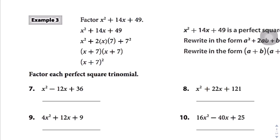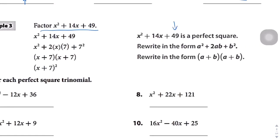Questions 7 through 10 are going to seem confusing because you're learning how to factor using these somewhat arbitrary rules — not my favorite way to teach this. What they want you to do is to be able to see that a quadratic is a perfect square, and fit it into the form a squared plus 2ab plus b squared, where you identify the a term and b term.